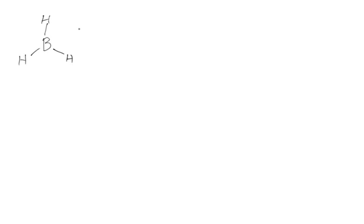This happens to be a system that does not conform to the octet rule. You can see that we have here only six valence electrons because three come in from the boron, and with three hydrogens we have three more valence electrons.